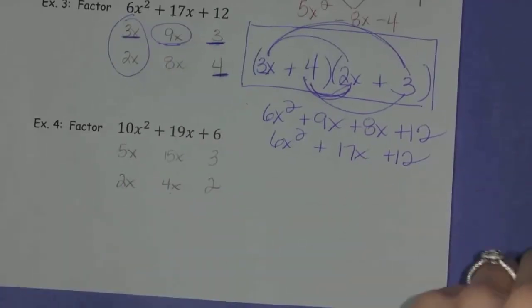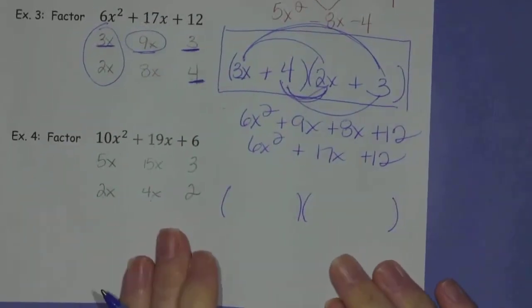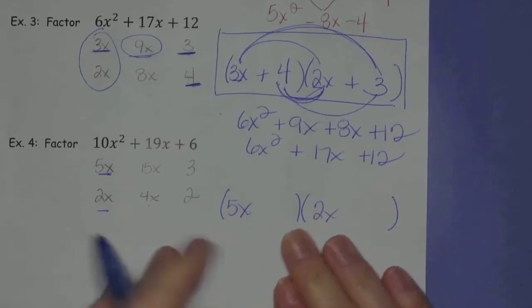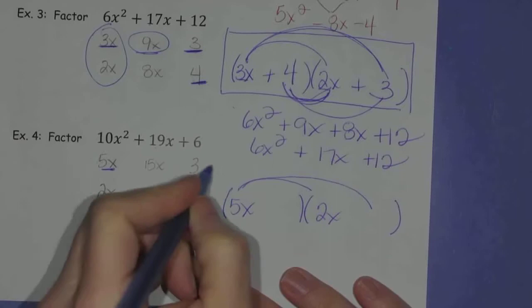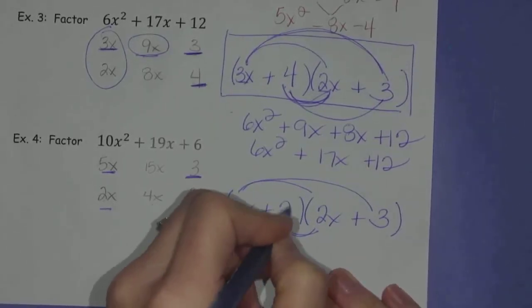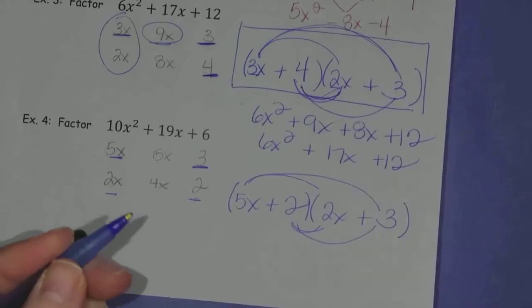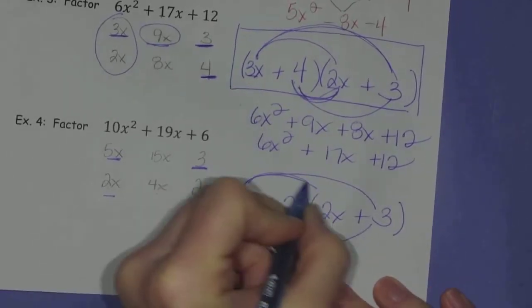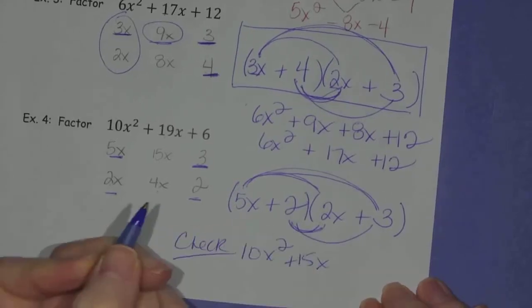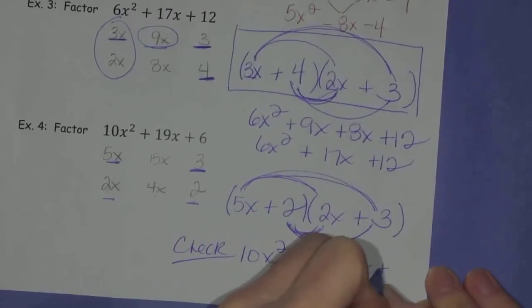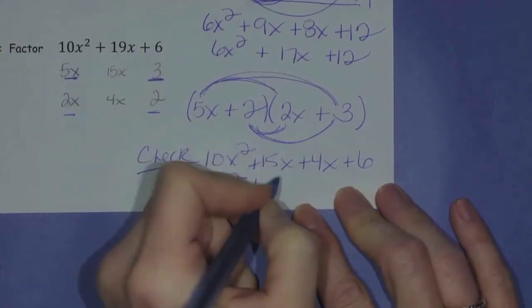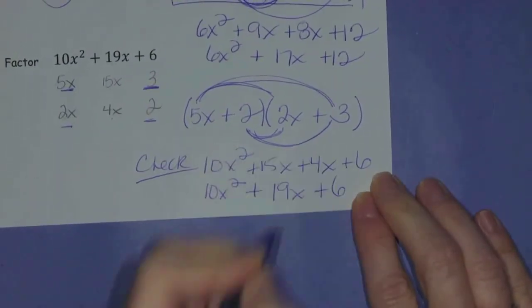Okay. So answer to this problem. Set your two parentheses down. 5x in the first slot. 2x over here in the other first position. Okay. 5x has to be multiplied by the 3. So we'll put the positive 3 back here. The 2x has to get multiplied by the 2. So we'll put that in there. And now we'll check it. Here's my check. 5x times 2x, 10x squared. 5x times 3, 15x. 2 times 2x, 4x. And 2 times 3 is 6. So final answer. 10x squared plus 19x plus 6.